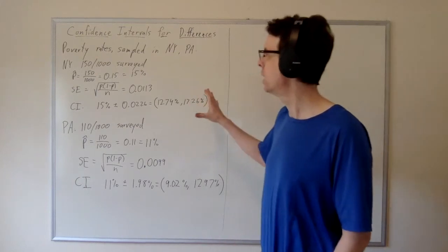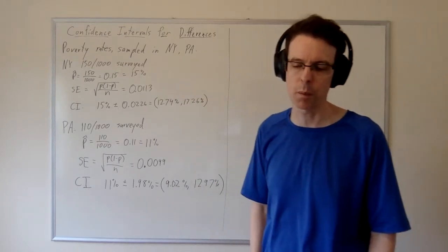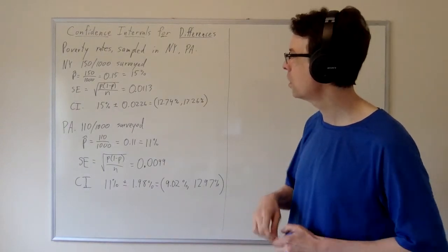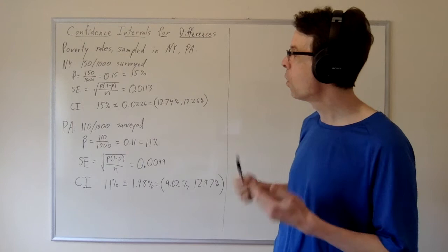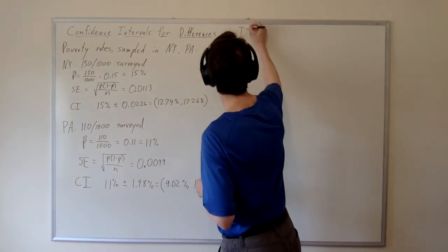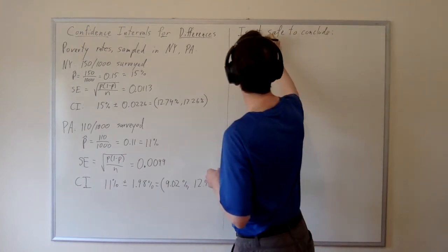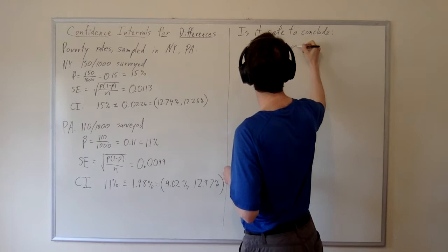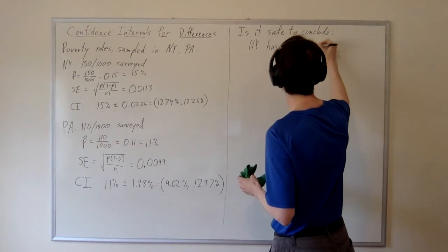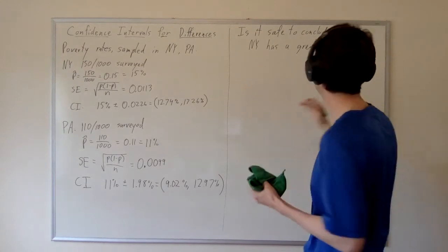When you look at this data — New York together with Pennsylvania — it's tempting to draw conclusions comparing the two states. The obvious conclusion is that more people in New York are living in poverty than in Pennsylvania. So is it safe to conclude that New York has a greater poverty rate than Pennsylvania? Let me be precise: I'm reasoning about the rate of poverty, not about total populations.